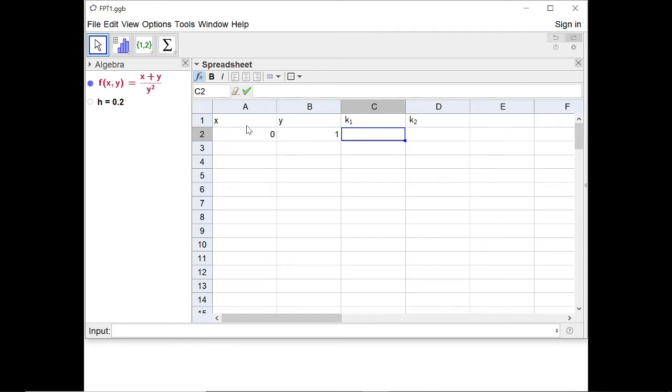And then k₁ is just h times f of xₙ and yₙ. So h times f of A2 and B2. And k₂ is h times f of xₙ plus h, yₙ plus k₁.